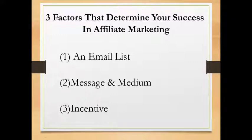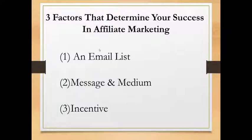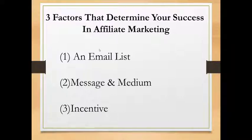Number one is an email list, number two is the message and medium, and number three is incentive. The email list is a database of email addresses of people who have given you permission to send them promotional emails. After they give you their email address, you'll need to send out quality messages to nurture them so they can get to know you, like you, trust you, and buy affiliate offers from you.